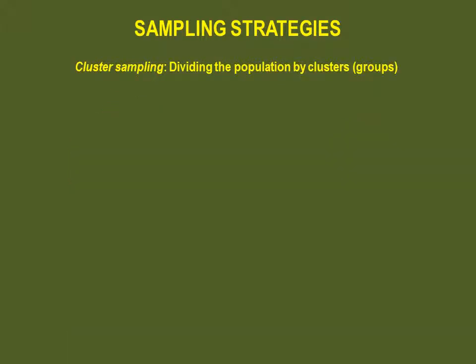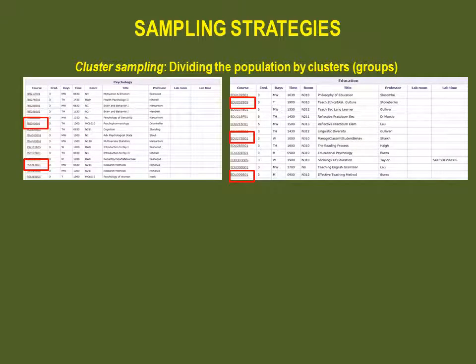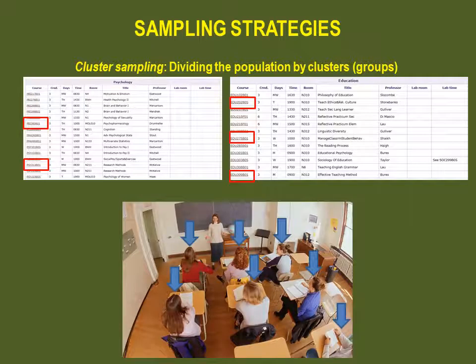The fourth and last sampling strategy is cluster sampling. You can group your population into different clusters or groups and then use all of the subjects in the selected clusters as your sample. For example, if the student council wanted to gather information on the need for another coffee shop on campus, they could randomly select five courses from the timetable and then interview all of the students present in class at that time.